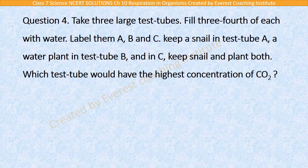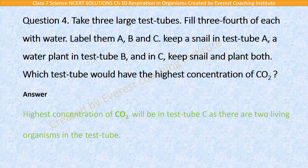Question number 4: Take 3 large test tubes. Fill three-fourths of each with water. Label them A, B and C. Keep a snail in test tube A, a water plant in test tube B, and both in C. Which test tube would have the highest concentration of carbon dioxide? The highest concentration of carbon dioxide will be in test tube C, as there are 2 living organisms in the test tube.